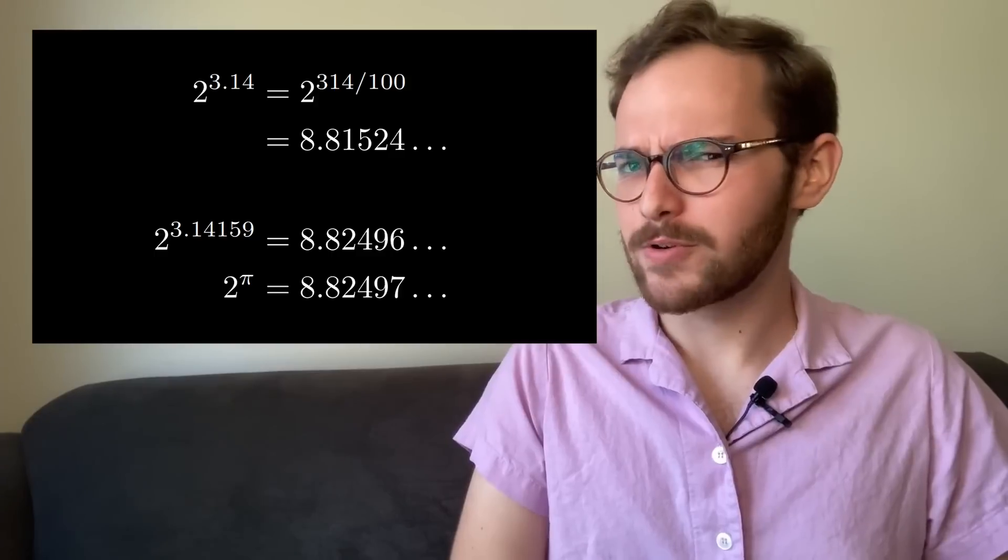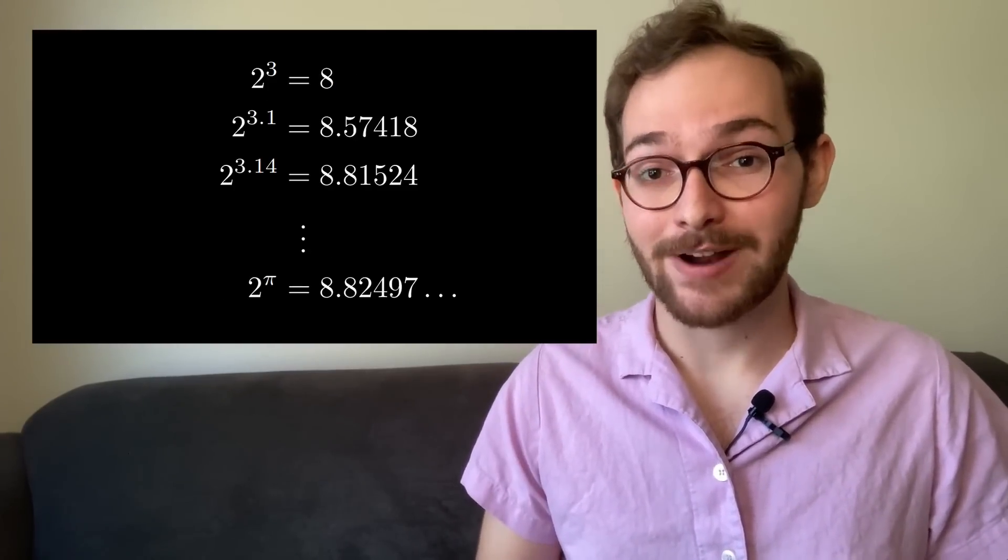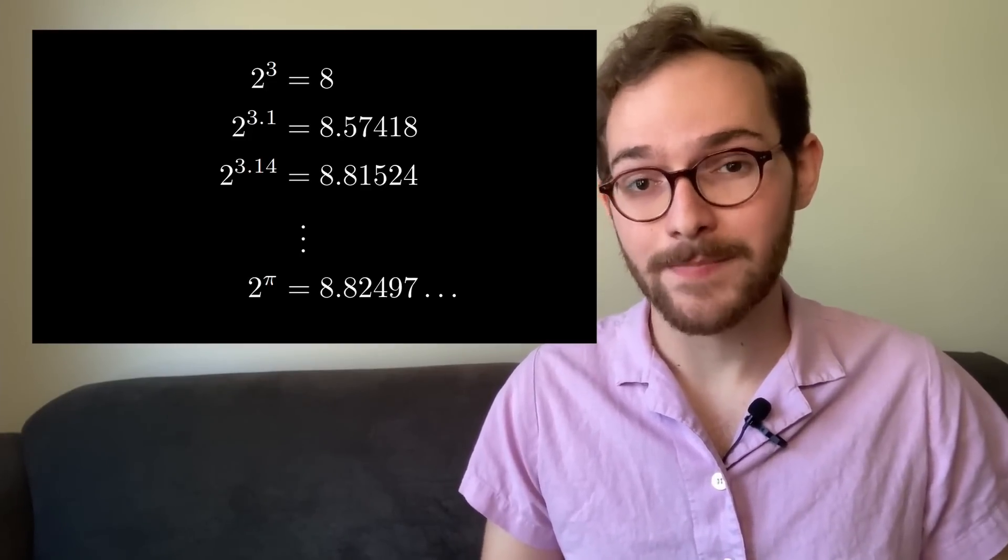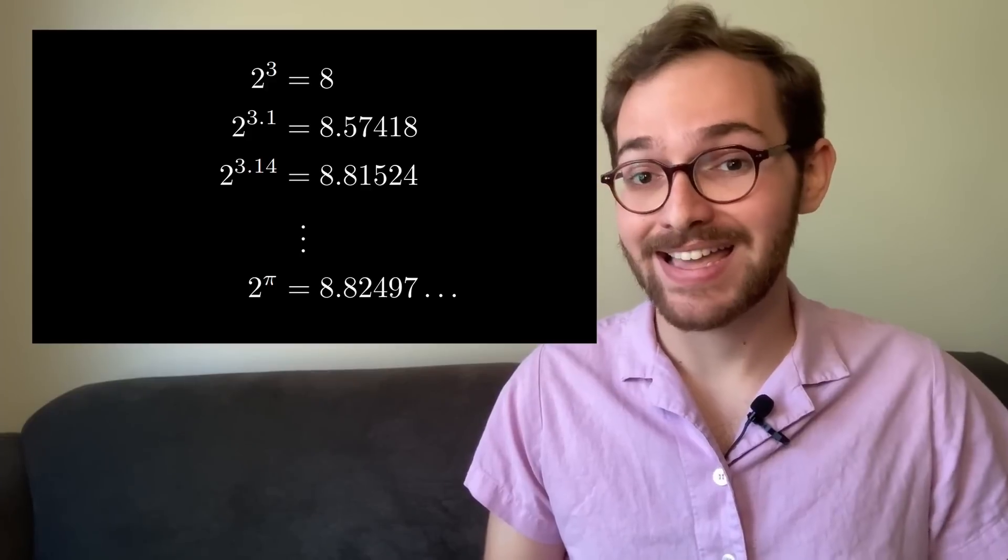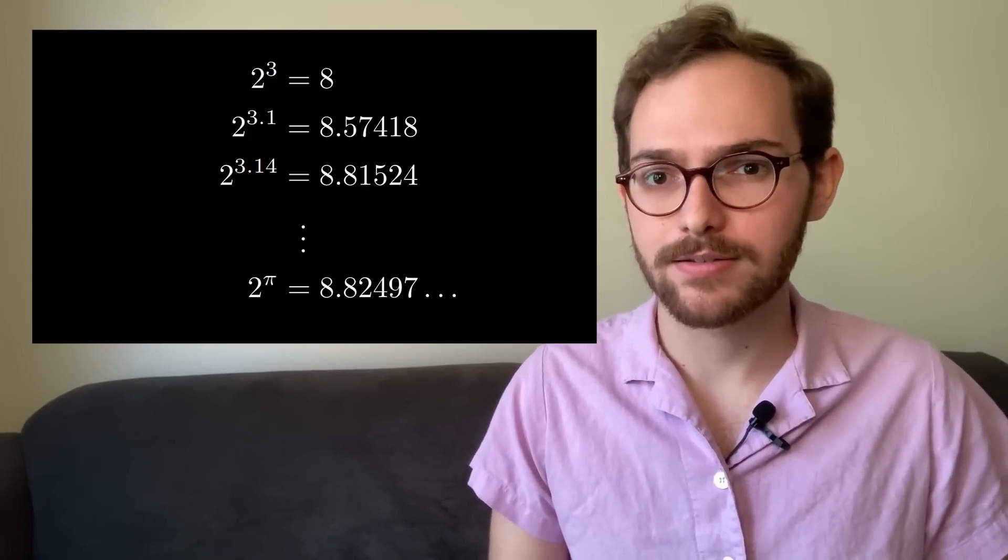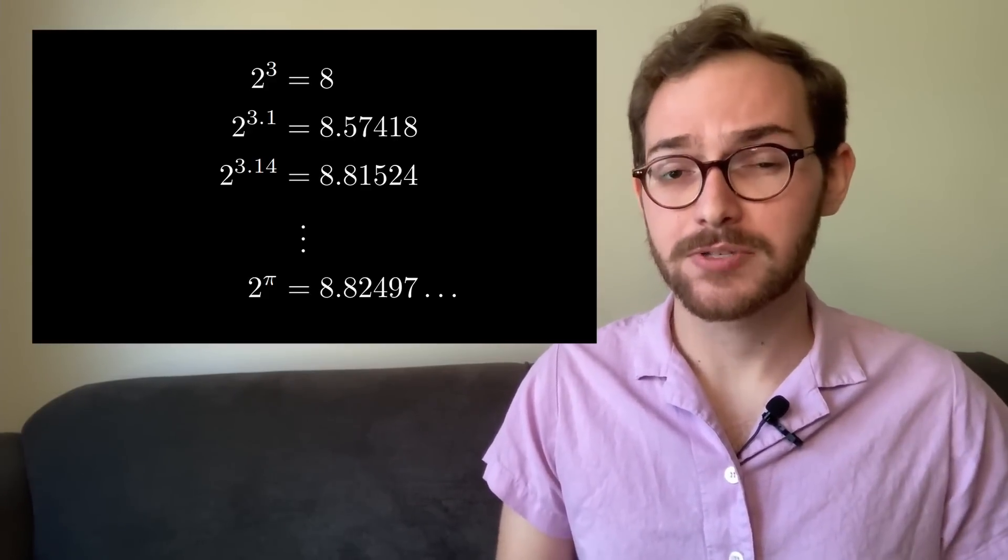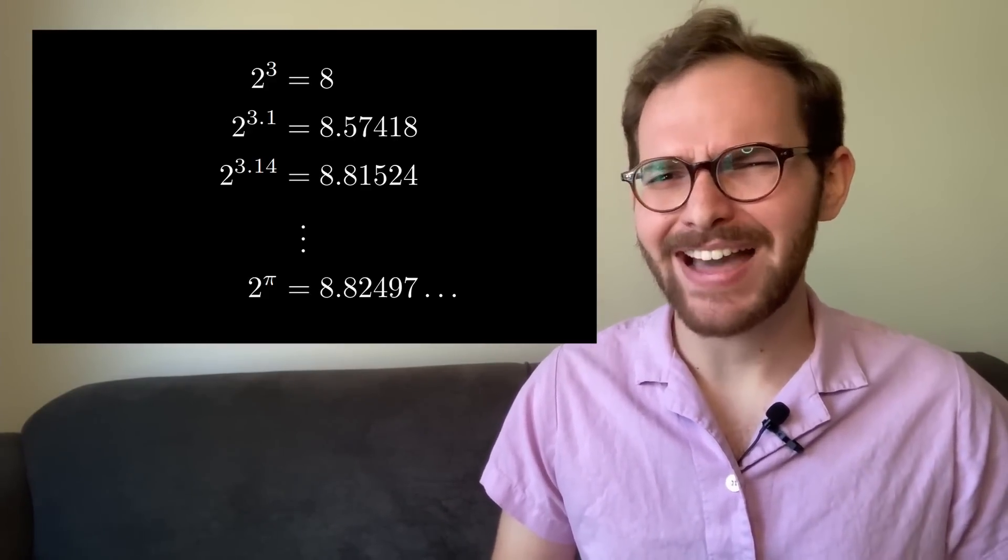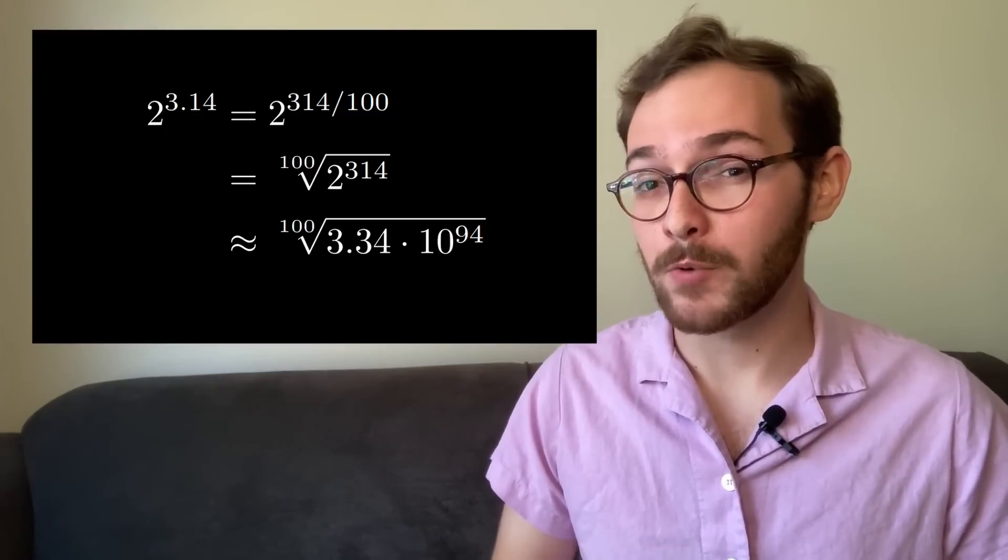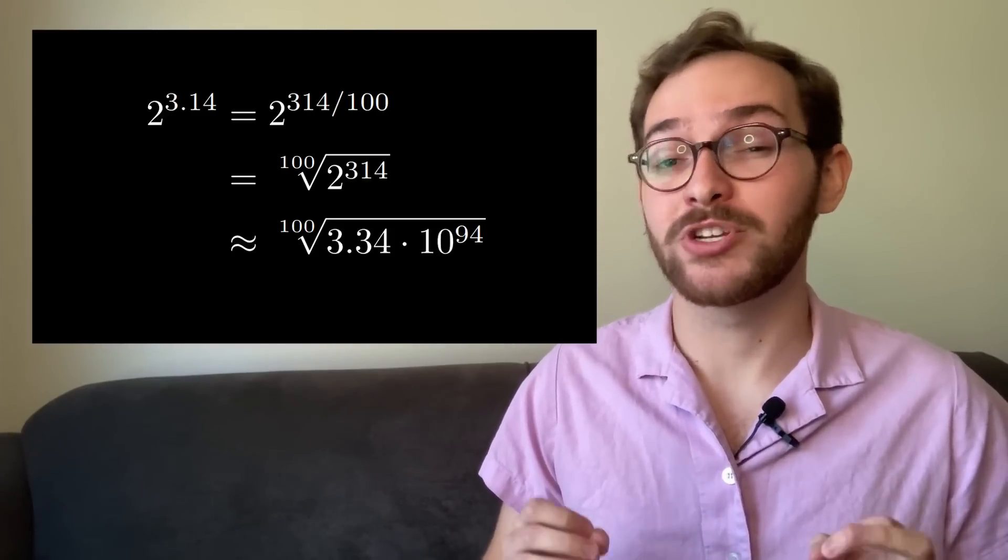A little more formally, you might think to define 2 to the pi as follows: take a sequence of rational numbers approaching pi, like 3, 3.1, 3.14, etc., and then we'll define 2 to the pi as the limit of the sequence 2 to the 3, 2 to the 3.1, and so on. This would actually work, but it's a bad definition for a couple of reasons. First off, it's really bad for computation. If you wanted to even just compute 2 to the 3.14 as an in-between step, you have to compute 2 to the 314, which is really huge.